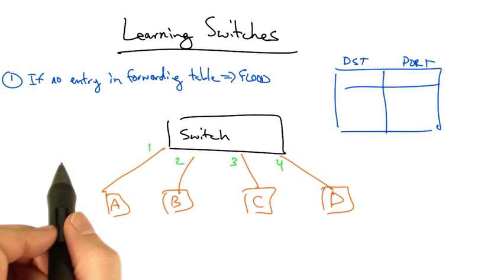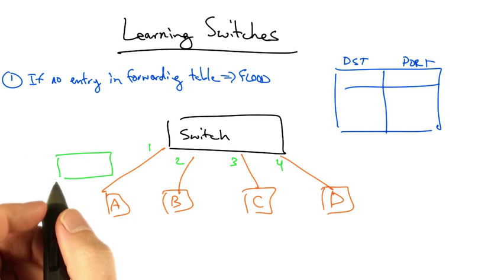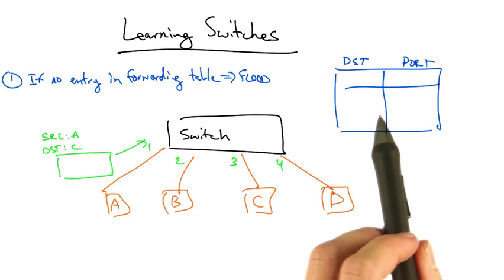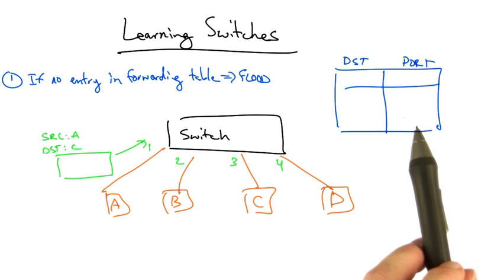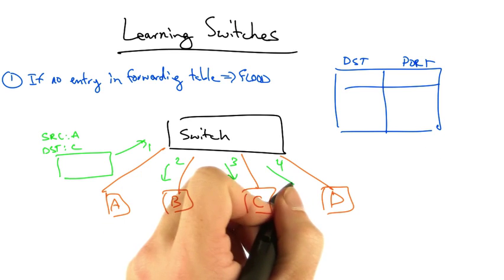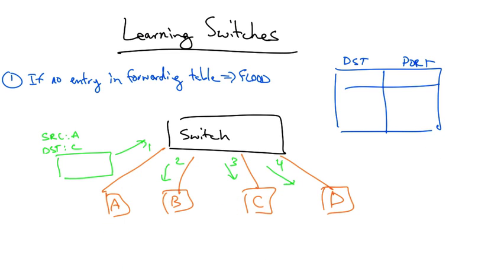Let's look at a quick example. If host A sends a frame destined for host C, then initially the switch has nothing in its table to determine where that frame should be sent. So it will flood the frame on all of its outgoing ports.